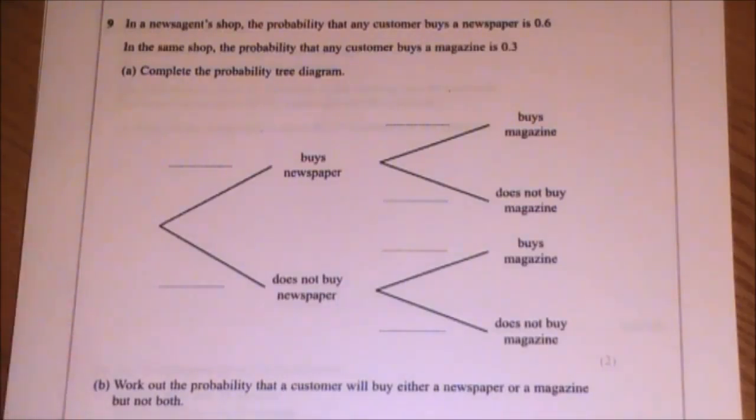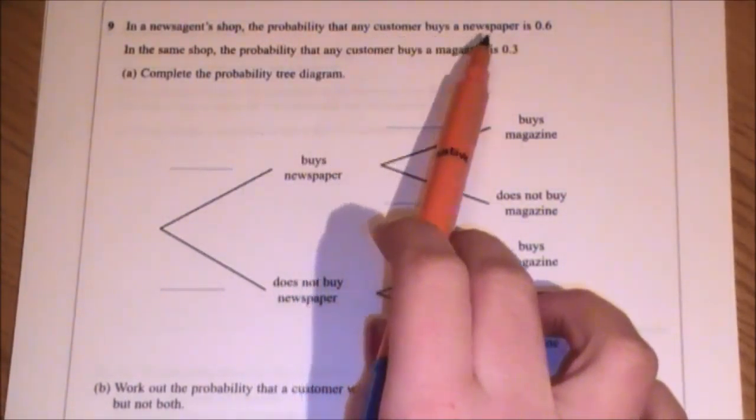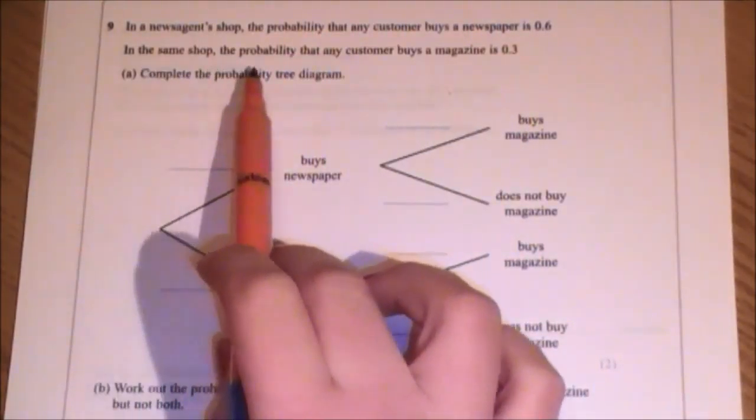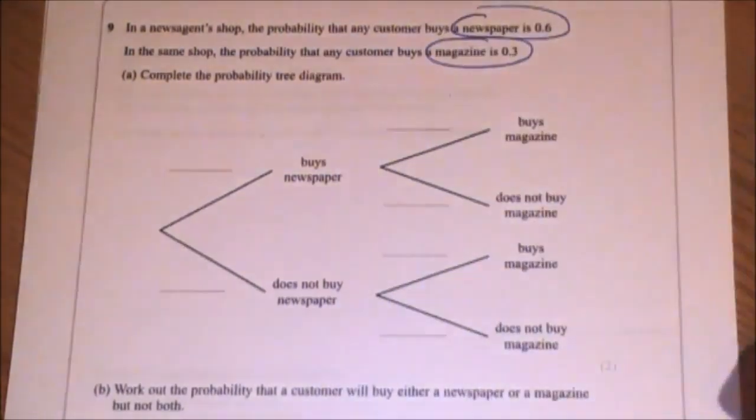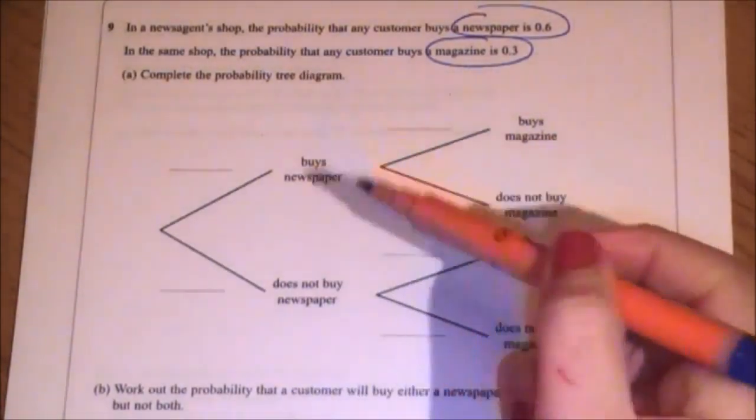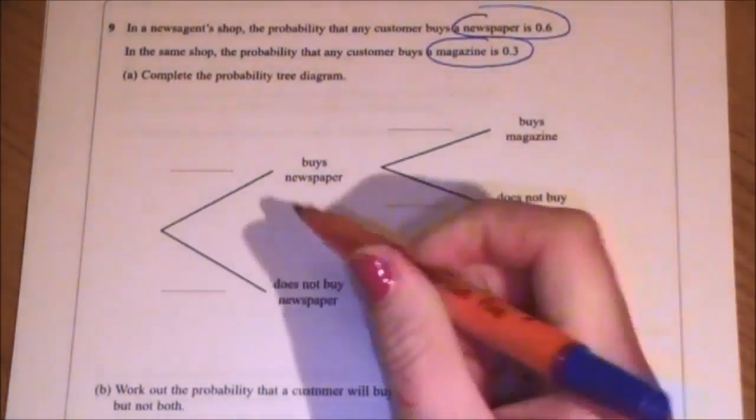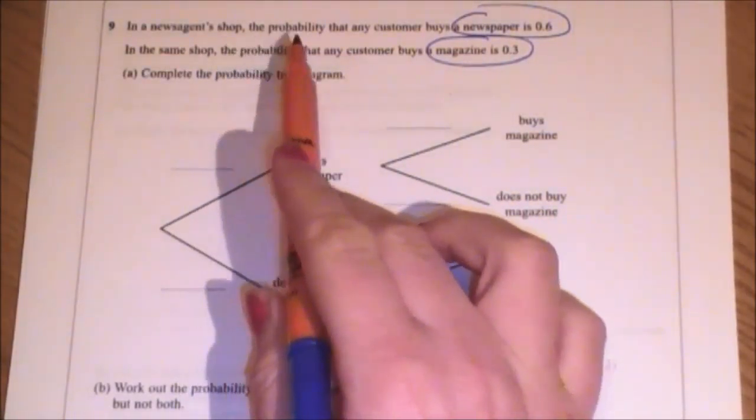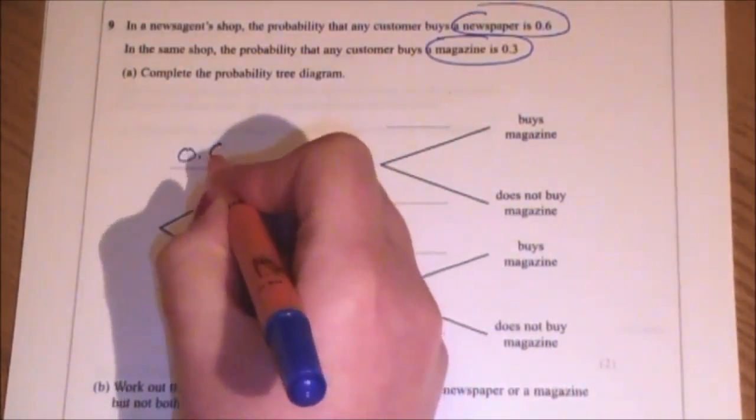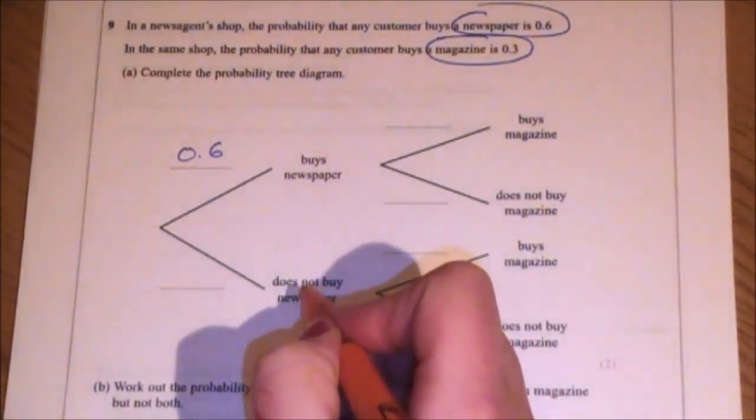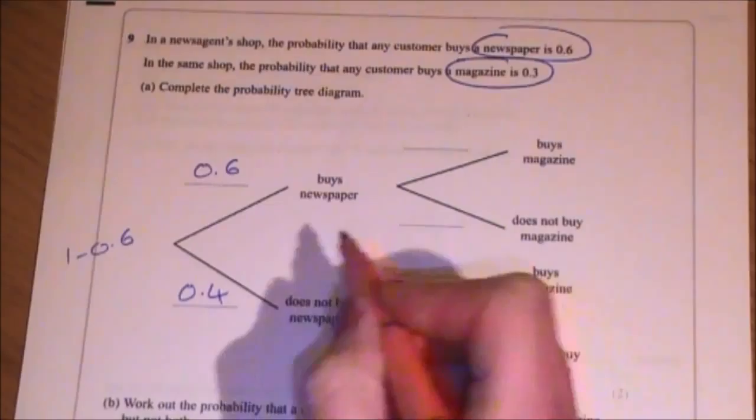Question 9 is a probability tree question with a slight twist actually. In a newsagent shop, the probability that any customer buys a newspaper is 0.6. In the same shop, the probability that a customer buys a magazine is 0.3. So straight away we're looking at two things here: newspapers and magazines. Complete the probability tree diagram. Here we have all the newspaper activity, and here we have the magazine activity. First let's deal with the newspapers. In the newsagent shop, the probability that they buy a newspaper is 0.6. Buys a newspaper, 0.6. That means that the probability of them not buying a newspaper needs to be 1 take away 0.6, which is 0.4. That's the newspapers dealt with.